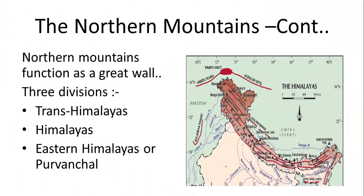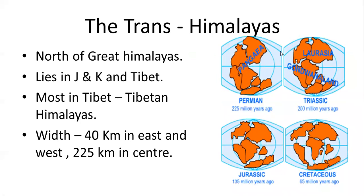The Himalayas have three divisions: Trans-Himalayas, Himalayas, and Eastern Himalayas or Purvanchal. Coming to the Trans-Himalayas — there was a huge landmass called Pangaea, which got divided into Laurasia and Gondwana land, and further kept on drifting. This is called the Continental Drift Theory, and it is also one reason why the Himalayas were formed. The Trans-Himalayas lie between Jammu and Kashmir and Tibet. Most of the Trans-Himalayas lie in Tibet, and that is why these mountains are called the Tibetan Himalayas.